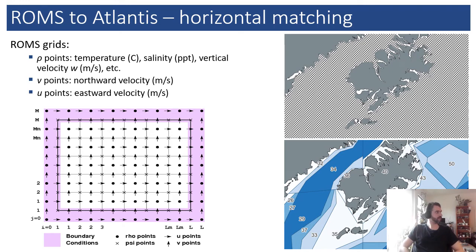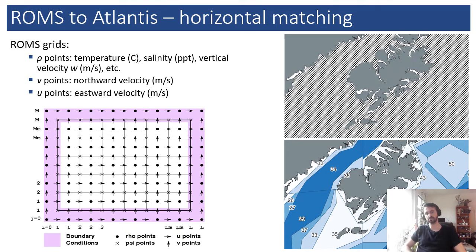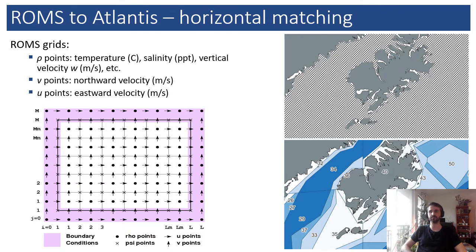The problem of translating ROMS data to Atlantis forcing files is basically a downscaling problem. You have the high-resolution grid of the ROMS model, which can be of varying resolution depending on the model, and then you have the Atlantis geometry, which is a much coarser spatial resolution. So you want to downscale the output of the first to fit into the second. We will be talking about three grids: the rho grid, which is the grid in ROMS where the state variables are defined, for example temperature, salinity, and vertical velocity.